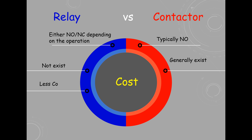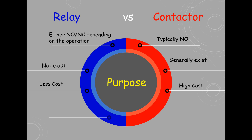A relay is generally inexpensive, while the contactor cost is high. A relay is used for low voltage switching in a system, whereas a contactor is used for high voltage switching in a system.